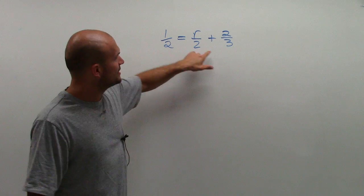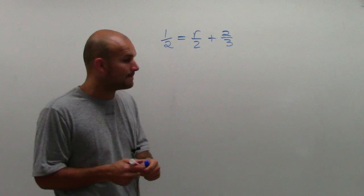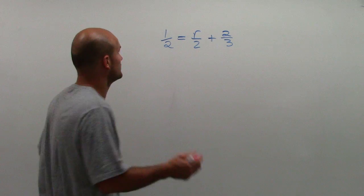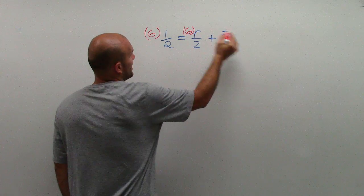And I'll show you that in a second. So we look here for our common denominator. Well, between two and three, the common denominator is six, meaning that's the smallest number that both two and three divide into. So what I'm going to do is I'm going to multiply each fraction by six.